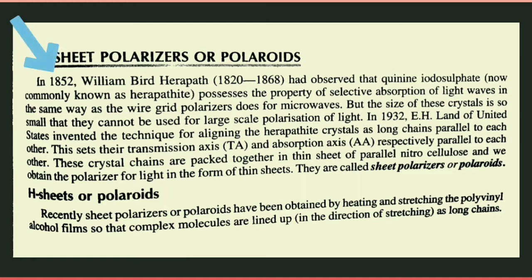In 1852, William Bird Herapath observed that quinine iodosulfate, now commonly known as Herapathite, possesses the property of selective absorption of light waves, in the same way as wire grid polarizers do for microwaves. Herapath ek scientist hai, unhon ne observe kiya ki quinine iodosulfate, jis ko ab hum commonly Herapathite kehte hain, uske andar ek property hoti hai aur woh property hai selective absorption of light waves ka — bilkul waise jaise wire grid polarizers microwaves ko selectively absorb kerta hai.